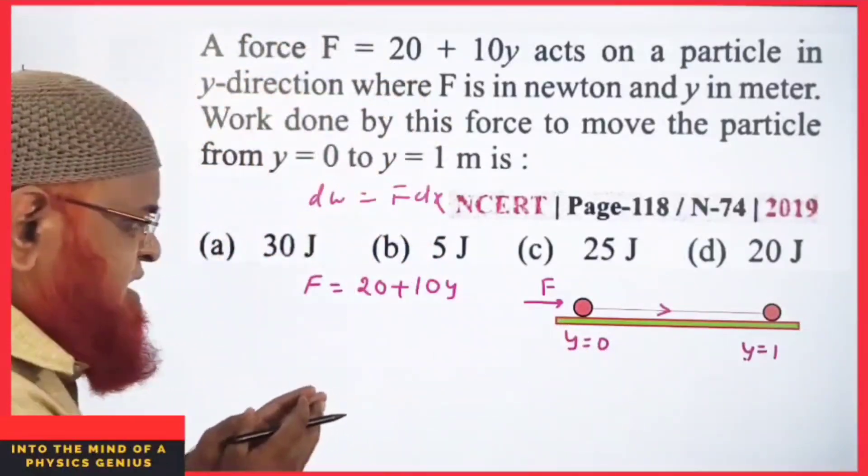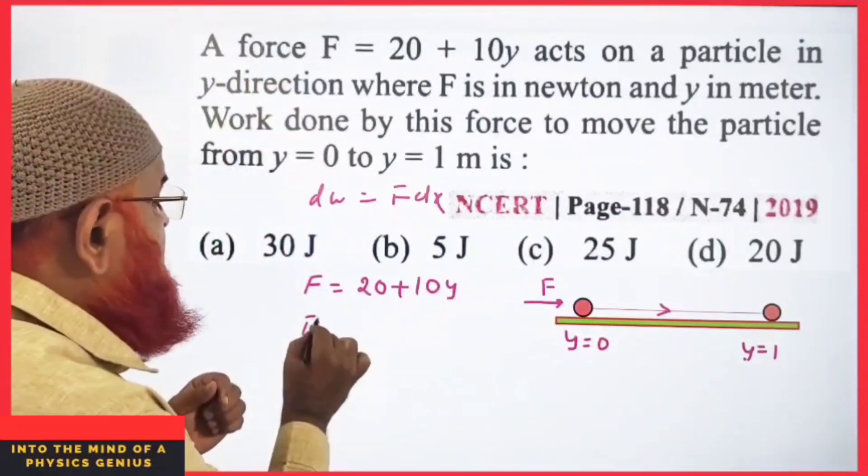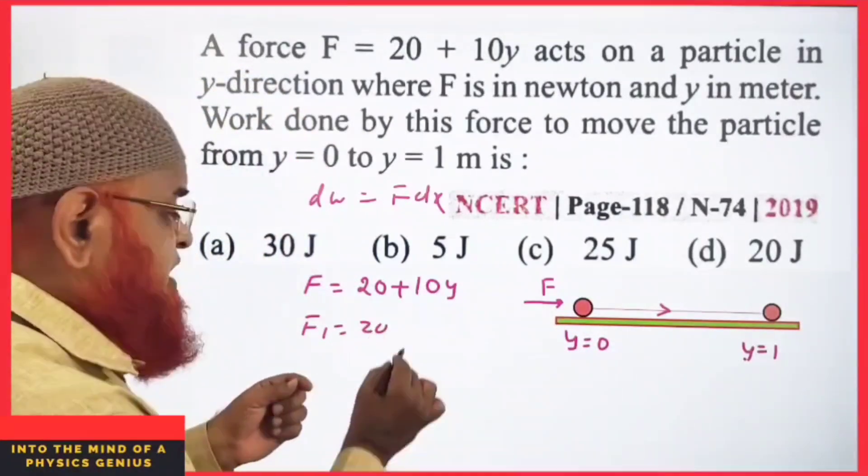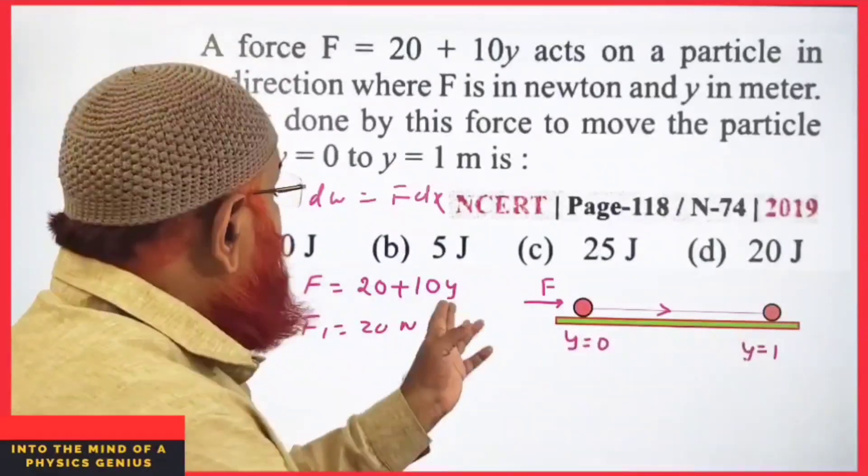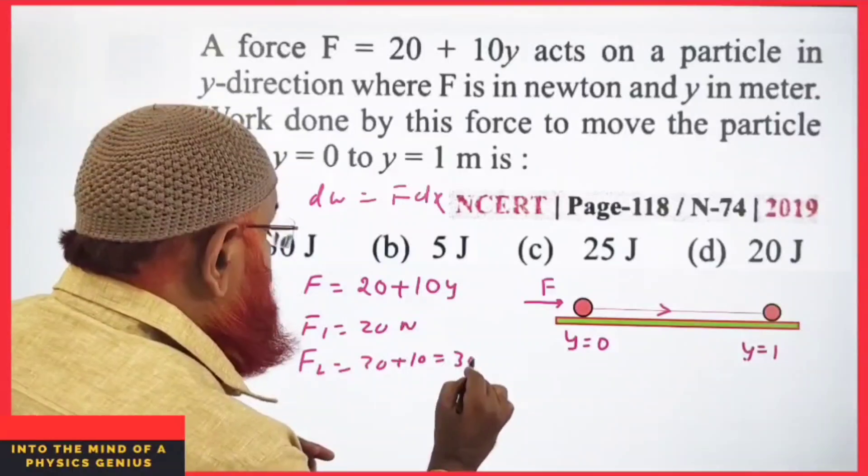What do you have to do here? You have to find out when y equals 0, so keep y equals 0 here. Then you will get F equals 20 N. Then you have to keep y equals 1. Then you will get F equals 20 plus 10 which equals 30 N.